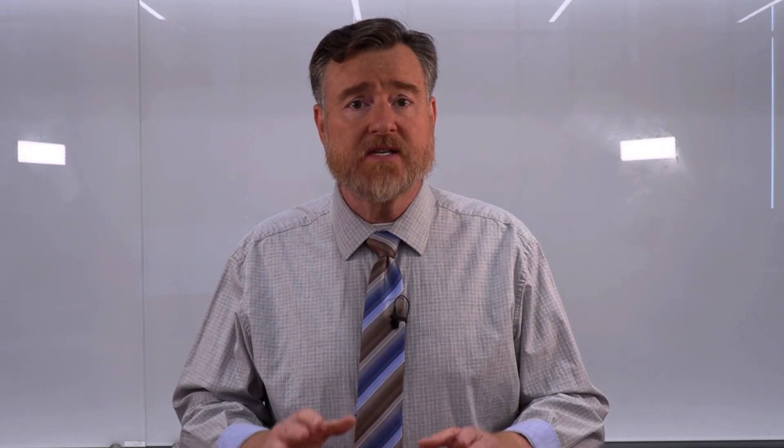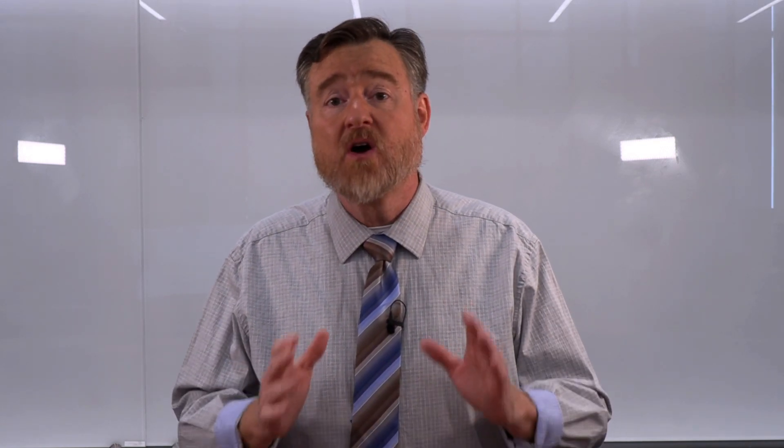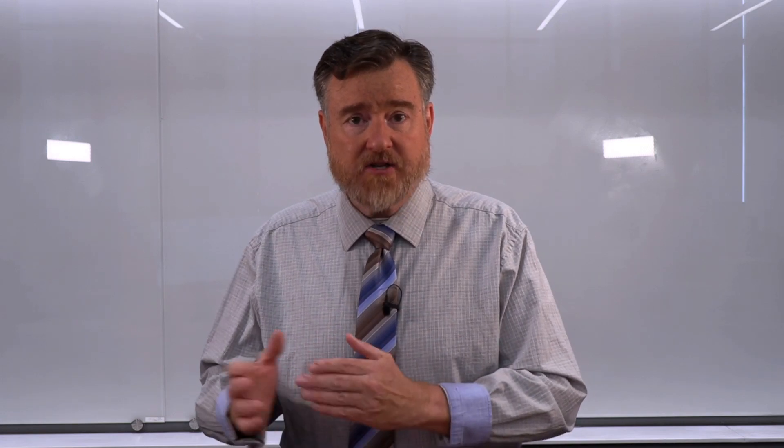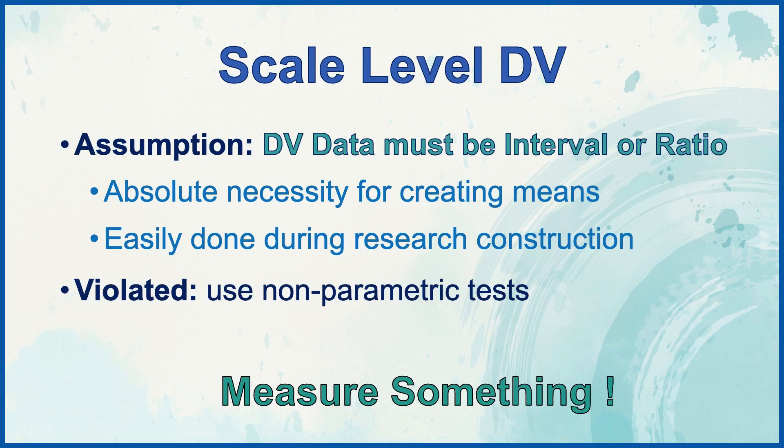There are two assumptions that are easy to address and fix early on in our research design. The first of these pre-data collection assumptions is to make sure that we have scale level data for our dependent variable. Those dependent variable data must be at the interval or ratio level. This is an absolute necessity for creating means — we cannot calculate a mean of nominal level data. This assumption can be easily addressed during our research construction, and the solution is to measure something.